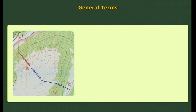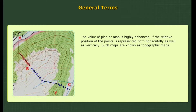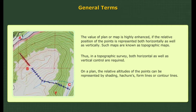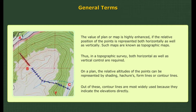General Terms. The value of a plan or map is highly enhanced if the relative position of the points is represented both horizontally as well as vertically. Such maps are known as topographic maps. On a plan, the relative altitudes of the points can be represented by shading, hachures, form lines, or contour lines. Out of these, contour lines are most widely used because they indicate the elevations directly.